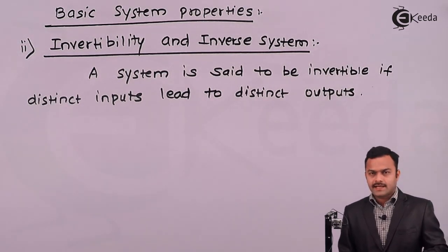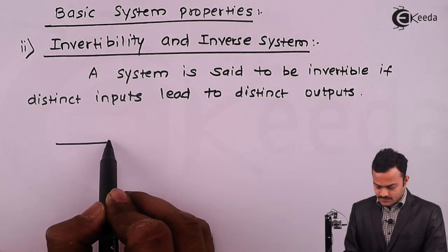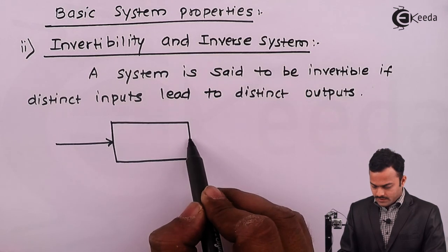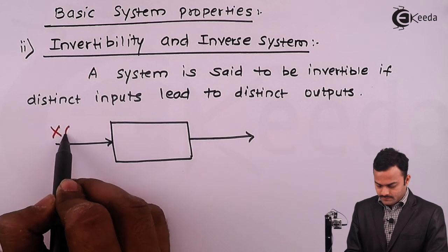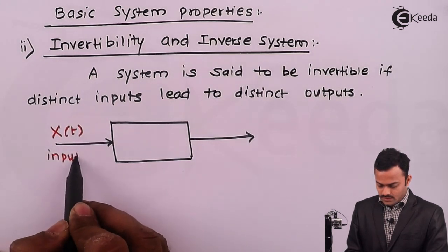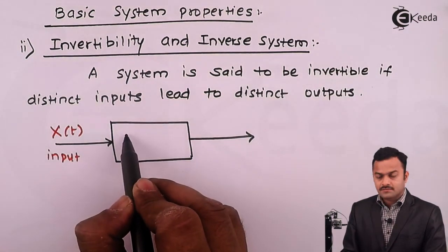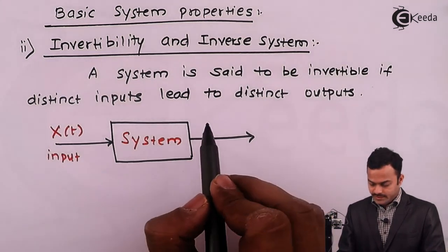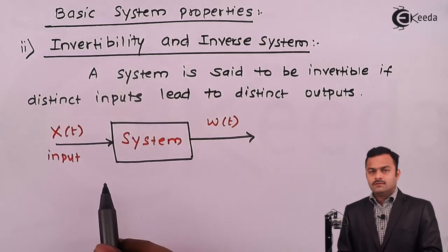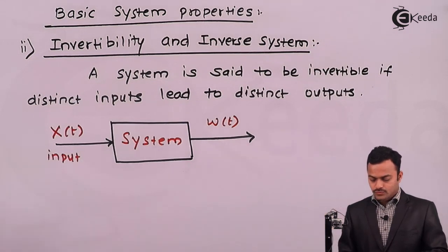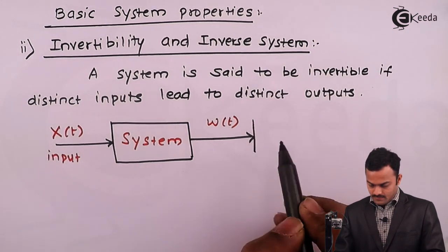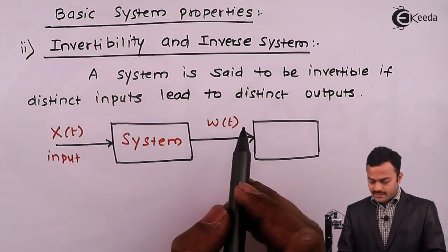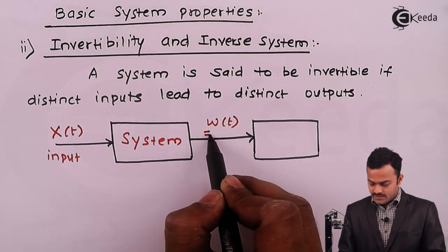Let's represent this diagrammatically. Suppose a signal is given to one continuous time system to get an output. Let's consider x(t) as input passing through a continuous time system to get an output, which I will represent as w(t). This output is then passed through one more system, and we can also call it y(t).